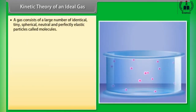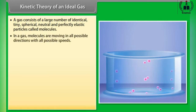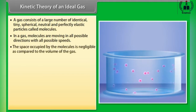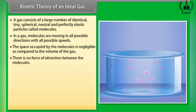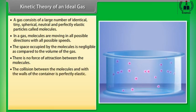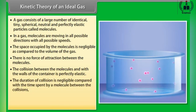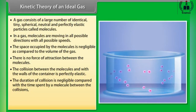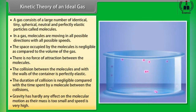Kinetic theory of an ideal gas. A gas consists of a large number of identical, tiny, spherical, neutral and perfectly elastic particles called molecules. Molecules move in all possible directions with all possible speeds. The space occupied by the molecules is negligible compared to the volume of the gas. There is no force of attraction between the molecules. Collisions between molecules and with the walls of the container are perfectly elastic. The duration of collision is negligible compared with the time spent by a molecule between collisions. Gravity has hardly any effect on molecular motion as their mass is too small and speed is very high.